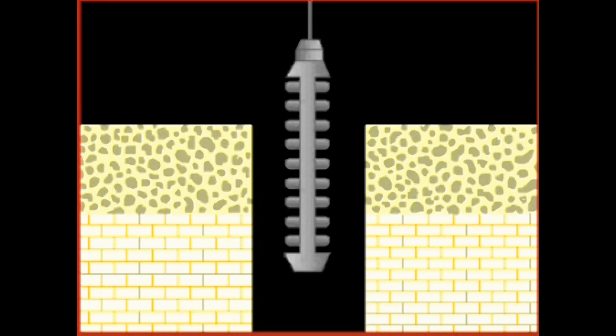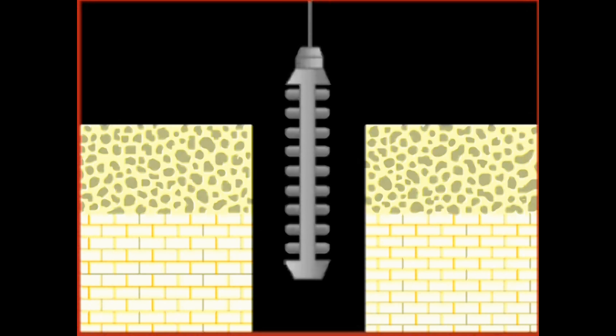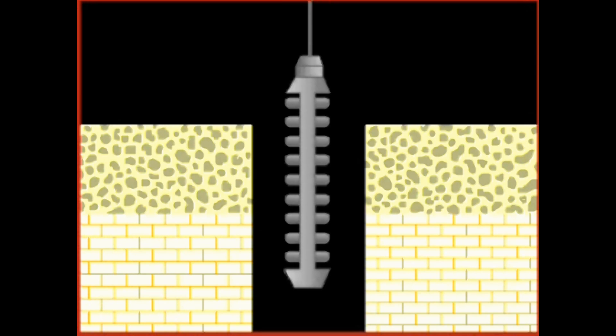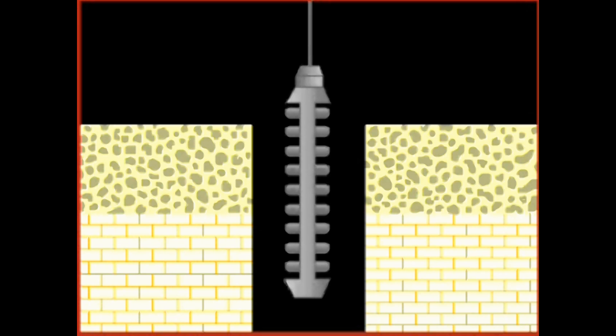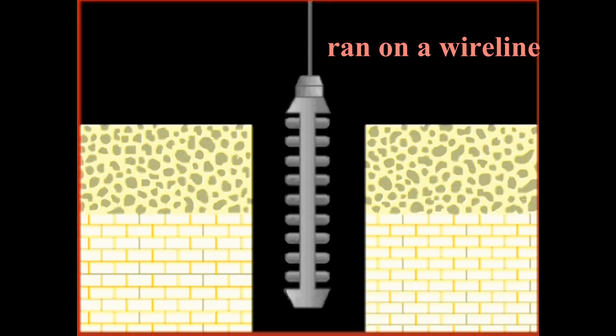Conducted after coring would have been completed, sidewall coring is usually done at the same time as open hole logging, and like the open hole logging suite, it is run on a wire line.